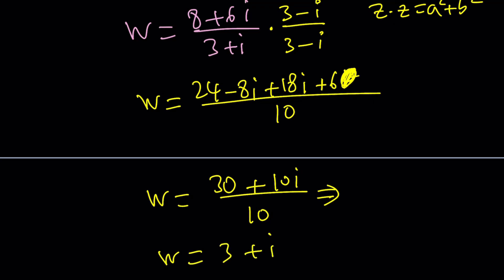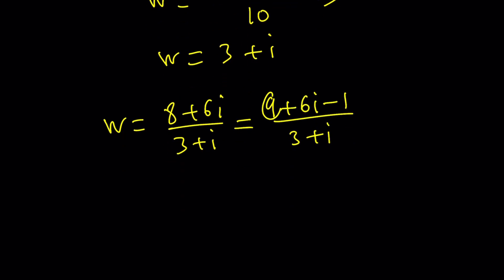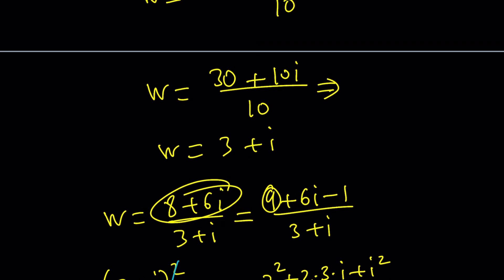Wait a minute. I divide something by 3 plus i and I get 3 plus i. How is that possible? Let me tell you why. So we divided 8 plus 6i by 3 plus i. Notice that 8 plus 6i can be written as 9 plus 6i minus 1 over 3 plus i. And then this is 3 squared. This is 2 times 3 times i and this is i squared. You get the idea? Yes. The numerator actually here is 3 plus i squared. So when you divide it by 3 plus i, 3 plus i cancels out and you end up with 3 plus i again. Make sense? That's why it worked out. But wait a minute. What is z?